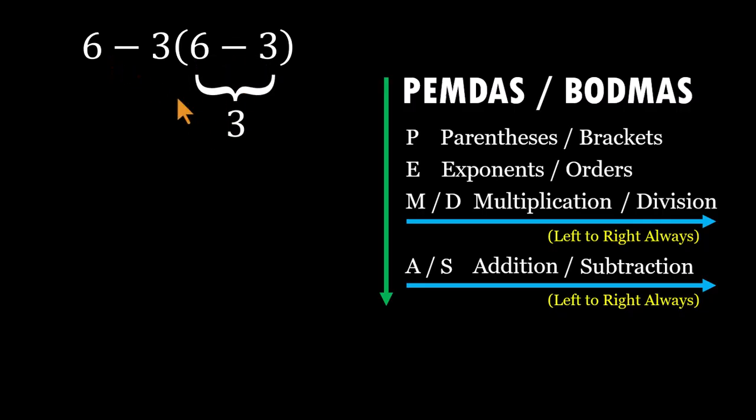Now bring everything else down. That parenthesis implies multiplication. So the expression becomes six minus three times three. At this point, we have multiplication and subtraction together. And here's the rule that matters. Multiplication comes before subtraction. So we multiply first. Three times three equals nine.